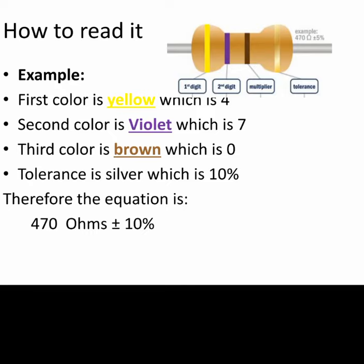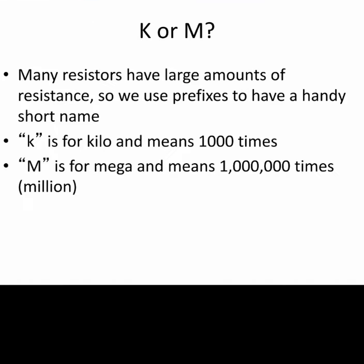Also, you may note capital K or capital M. Many resistors have a larger amount of resistance, so we use a prefix to make a handy short name. K is for kilo and it means 1,000 times. M is for mega and it means 1,000,000 times.